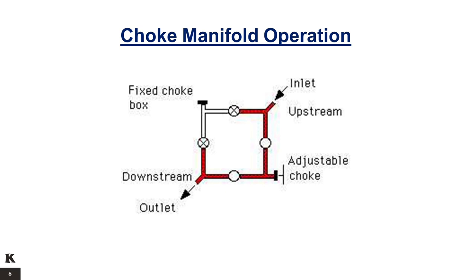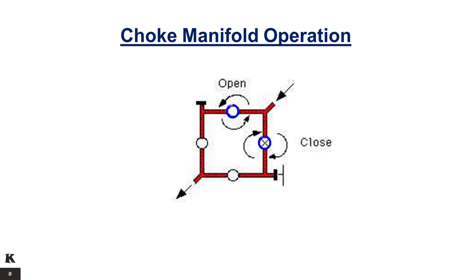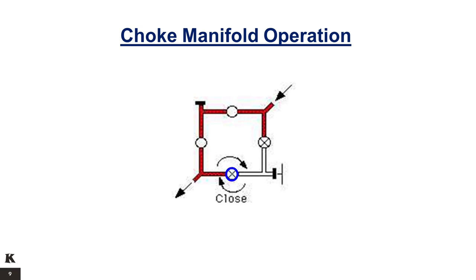Common operation: changing from adjustable choke to fixed choke. Step 1 — Preparation of fixed choke box: adjust the adjustable choke until the flow stabilizes, then prepare the equivalent fixed choke to be installed. Step 2 — Pressurizing fixed choke box: open the downstream valve of the fixed side to equalize pressure. It is advisable to open the downstream rather than the upstream for safety. Step 3 — Diverting the flow from adjustable to fixed side: open simultaneously the upstream valve on the fixed side whilst the upstream valve on the adjustable side is closed. Step 4 — Flow through fixed choke: the downstream valve on the adjustable side is closed and pressure is bled off on the adjustable choke.